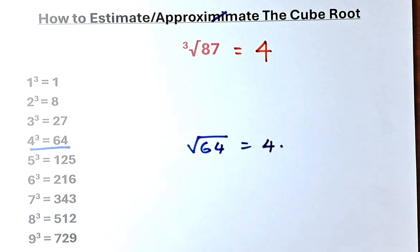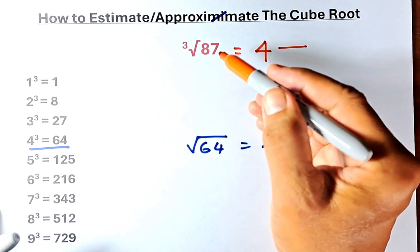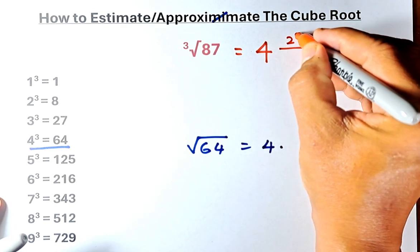Now the next step we are going to do is that we are going to find the fraction to approximate it. So to find the fraction is very simple. You're going to do a numerator and denominator. The numerator you just take 87 minus 64 that will give us 23.